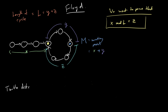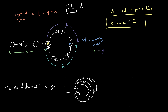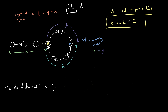Now let's do the math. The turtle (tortoise) distance is X plus Y — the slow pointer goes all the way until it reaches the cycle, goes a bit more, then stops at the meeting point. There's also a small proof that the turtle won't do a full loop before the hare catches up, but we'll skip that for now. The hare goes twice as fast, so the hare distance is two times X plus Y.